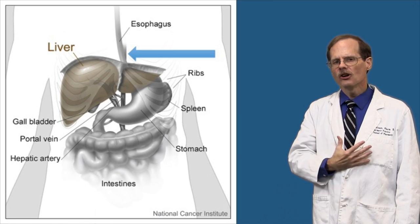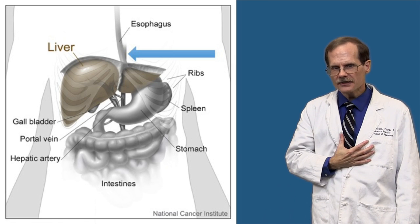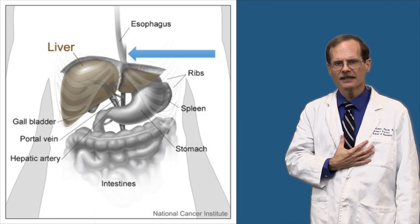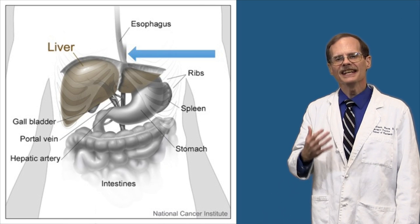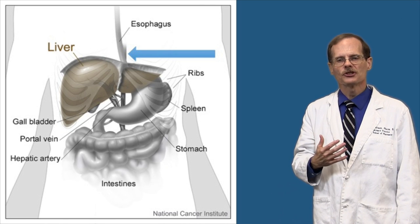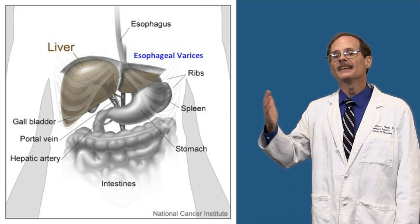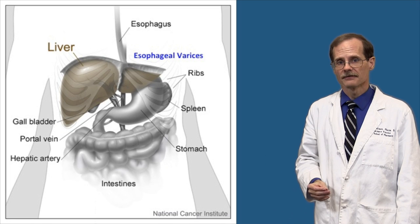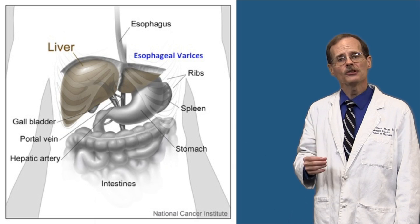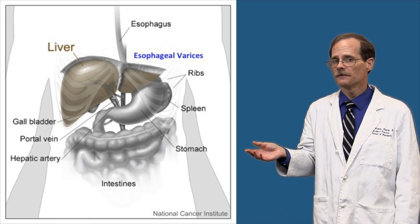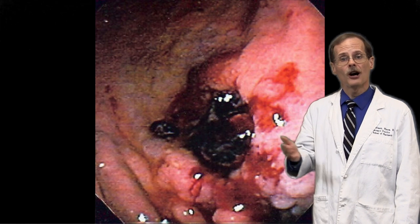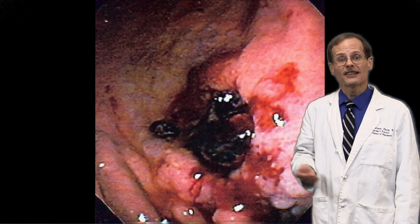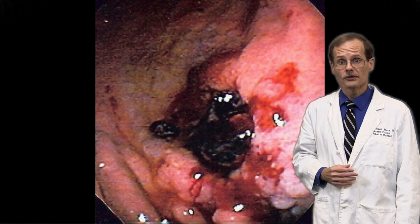The veins in the lower esophagus are particularly affected by this process, leading to a condition called esophageal varices. The patient with esophageal varices may present vomiting blood or with black tarry stools.